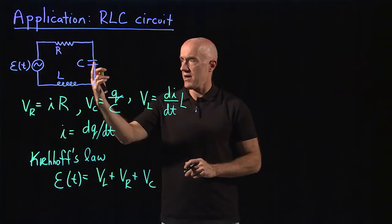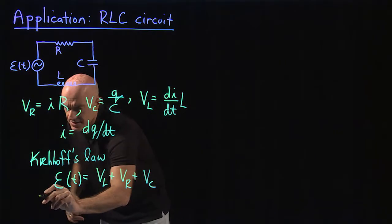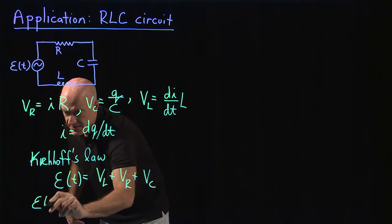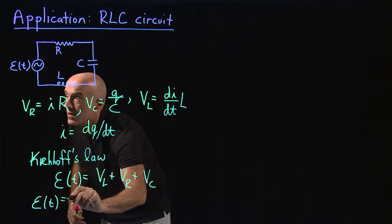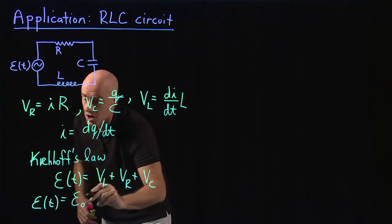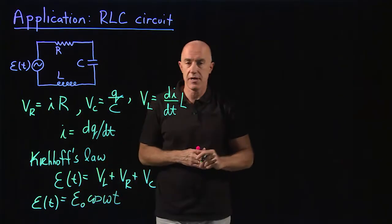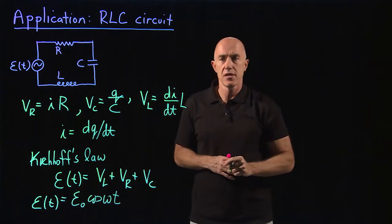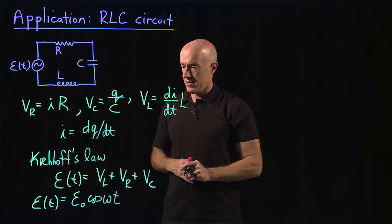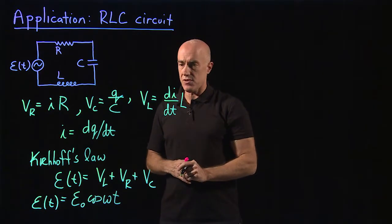The AC current can be modeled as E(t) equals some amplitude E naught times cosine ωt. So that's the sinusoidal AC current. So putting this together, what is the differential equation?